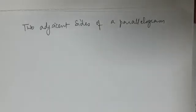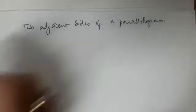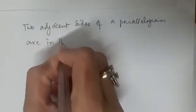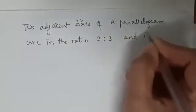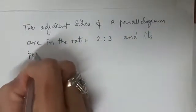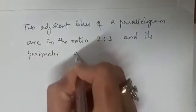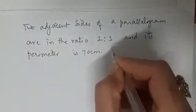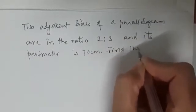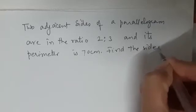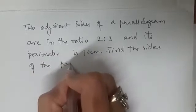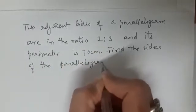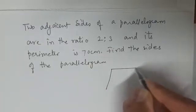Let me discuss this interesting question. Two adjacent sides of a parallelogram are in the ratio 2:3 and its perimeter is 70 centimeters. Find the sides of the parallelogram. This is from the chapter on quadrilaterals. In this question, you are given a parallelogram and it is given that two adjacent sides are in the ratio 2:3.